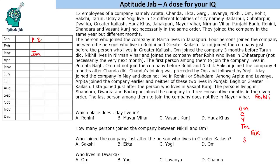Let's confirm: Rohit and Nikhil joined before Om, so Om cannot join earlier. Looking at what else is given about Rohit and Nikhil — Rohit lives in Chhattarpur and Nikhil lives in Nirman Vihar. We know that Punjabi Bagh is here and Janakuri is here. Rohit and Nikhil live in Nirman Vihar and Chhattarpur, which are not among these, so at least four places will be before these people.